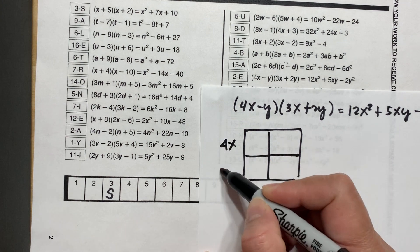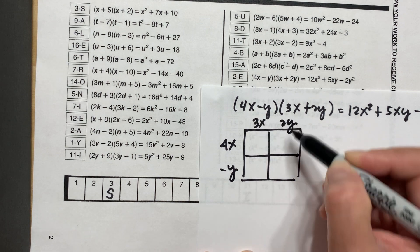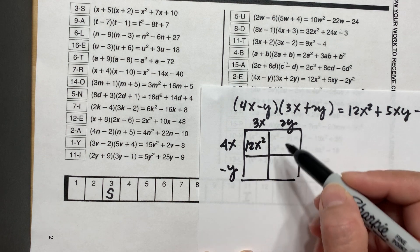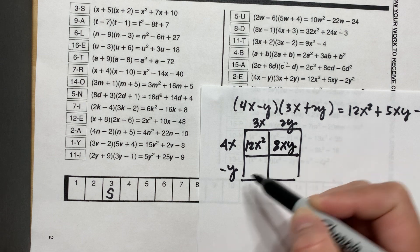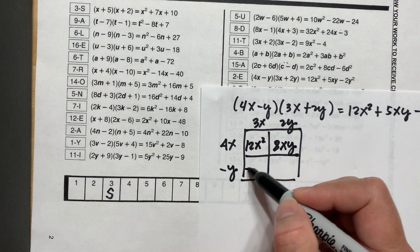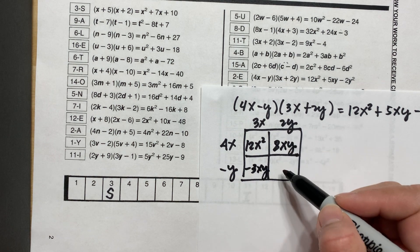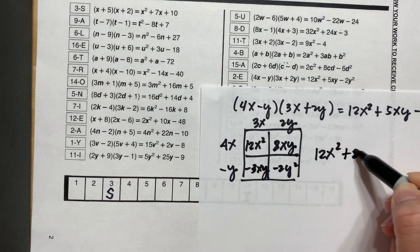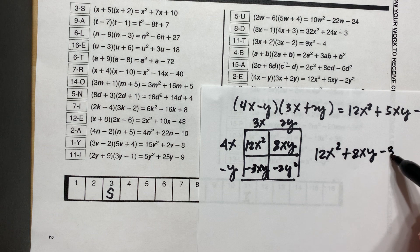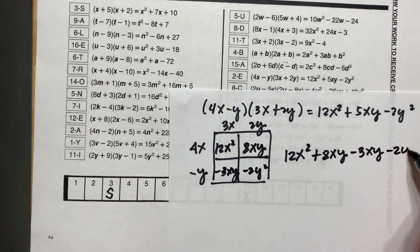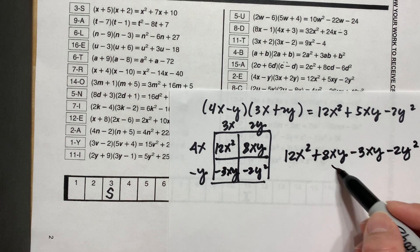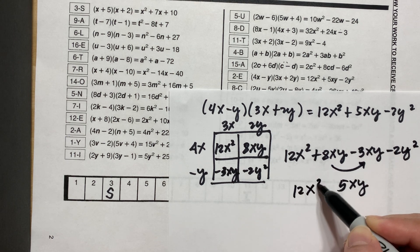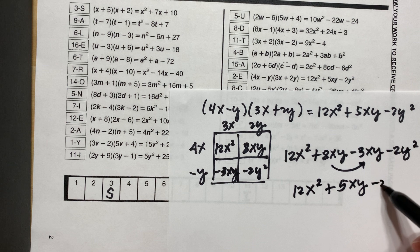We have 4x and negative y across the top, and 3x and 2y on the side. 4x multiplied by 3x is 12x squared. 4x multiplied by 2y is 8xy. Negative y multiplied by 3x is negative 3xy. Negative y multiplied by 2y is negative 2y squared. Rewriting: 12x squared plus 8xy minus 3xy minus 2y squared. Then 8xy minus 3xy is 5xy.